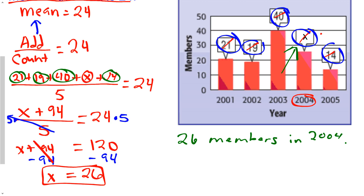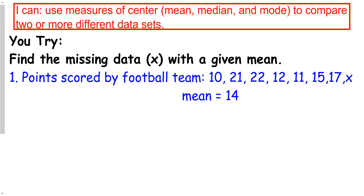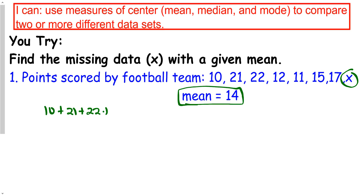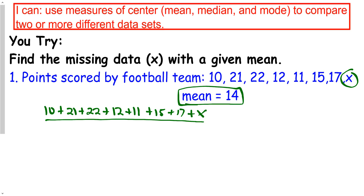Let's move forward to a more abstract problem — basically the same thing but without a graph context. The points scored by the football team were 10, 21, 22, 12, 11, 15, 17, and X. I'm not sure what that last score was, but I do remember that the average score was 14. Go ahead and pause the video and give this one a shot. We set this up the same way: (10 + 21 + 22 + 12 + 11 + 15 + 17 + X) divided by how many data points there are.